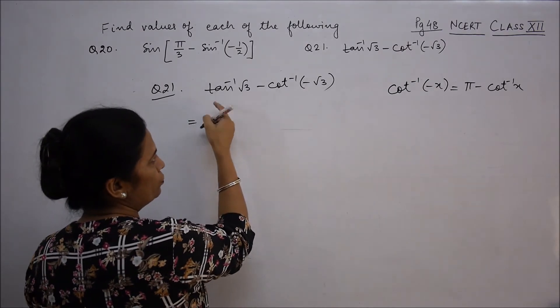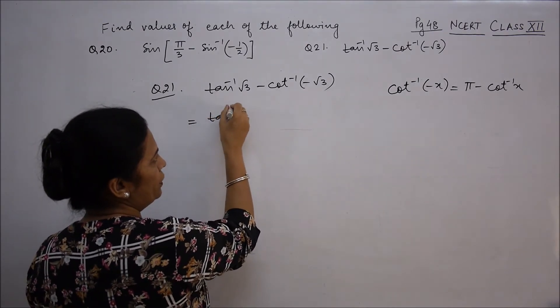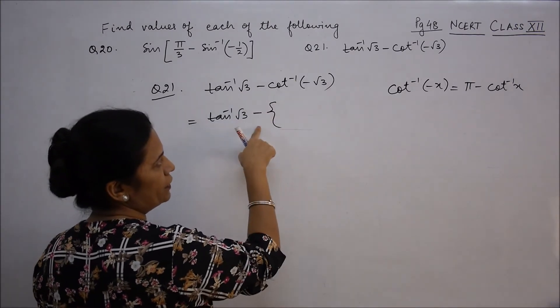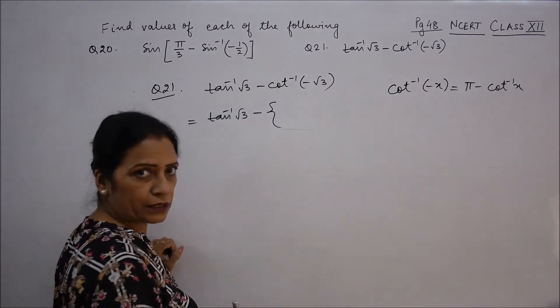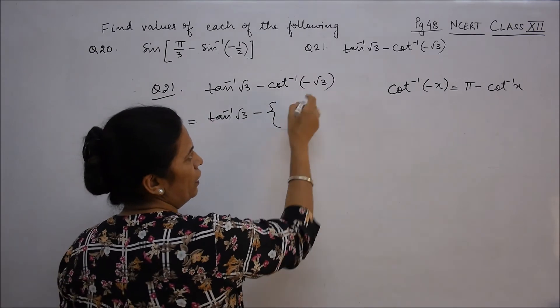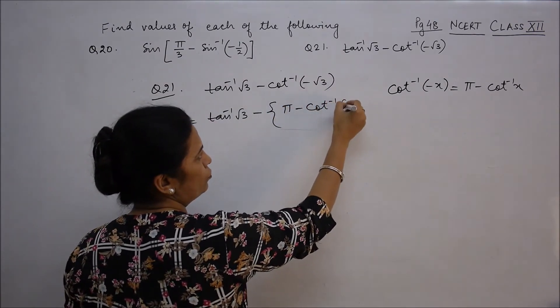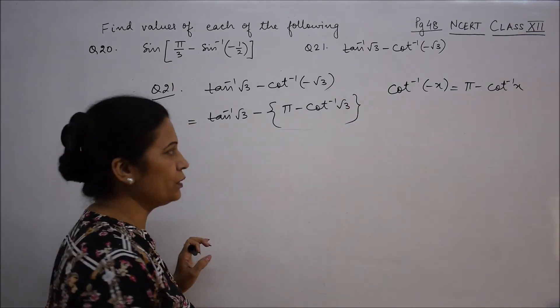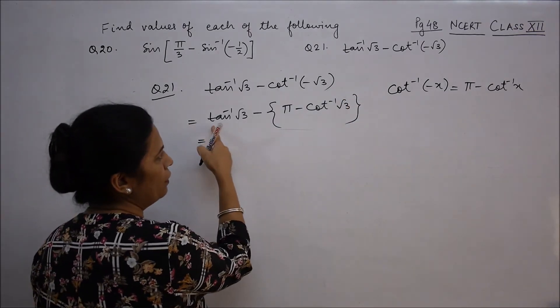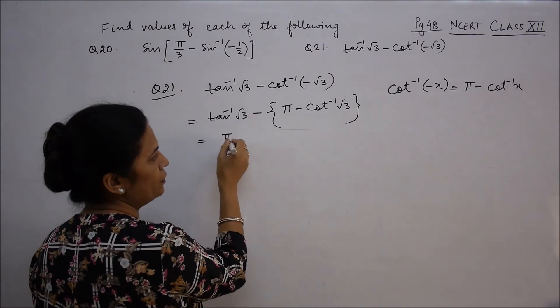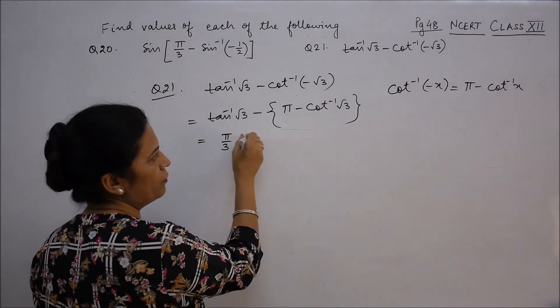Using this, tan inverse √3 minus. Now cot inverse(-x) based on this formula becomes π minus cot inverse √3. Now tan ki value √3 kab hoti hai? At π/3.